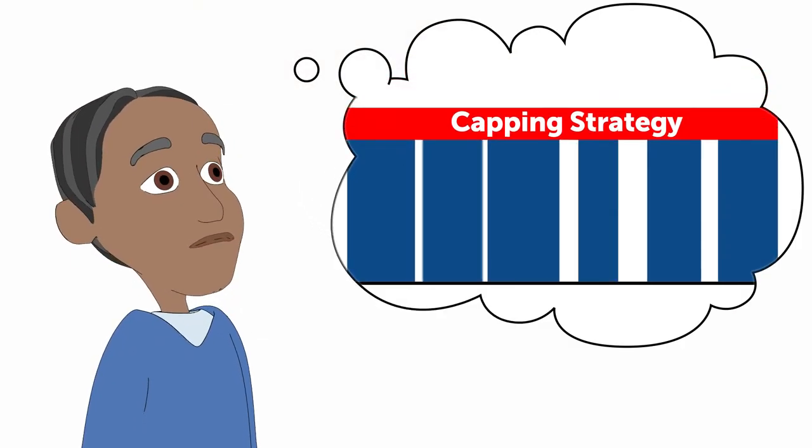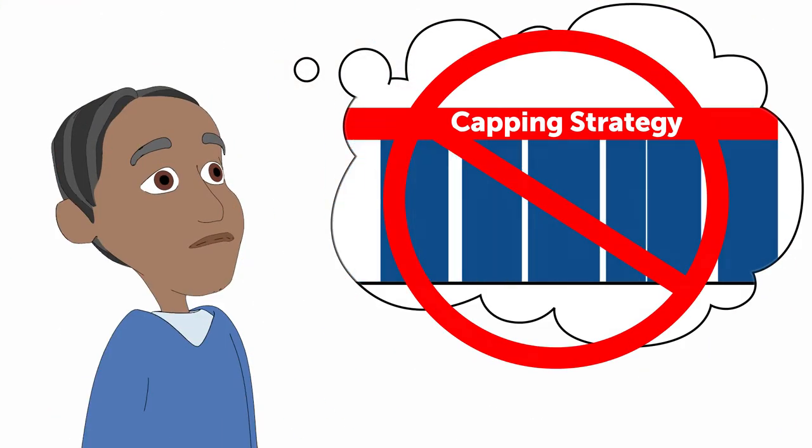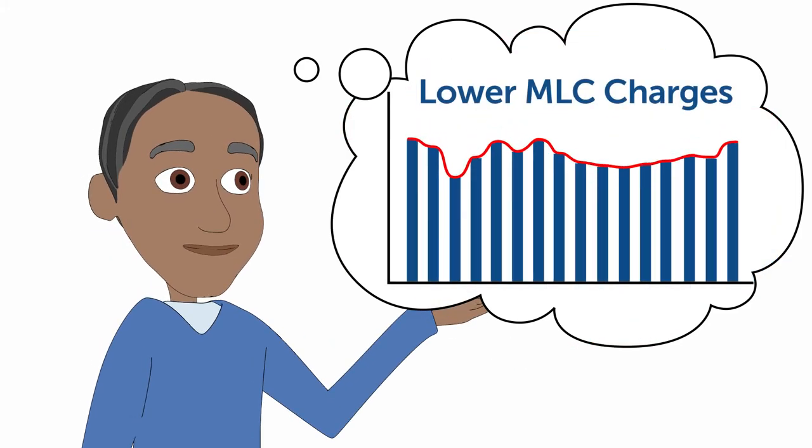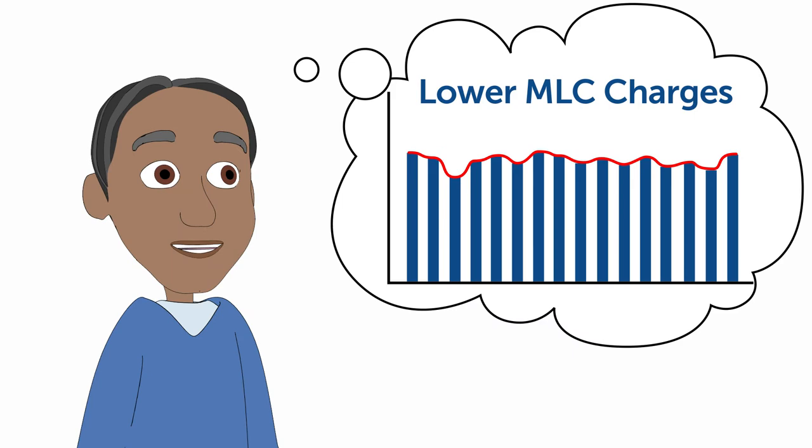No more clumsy caps. No more resource contention. Just higher service levels and lower MLC charges because more batch jobs are processed during off-peak periods.